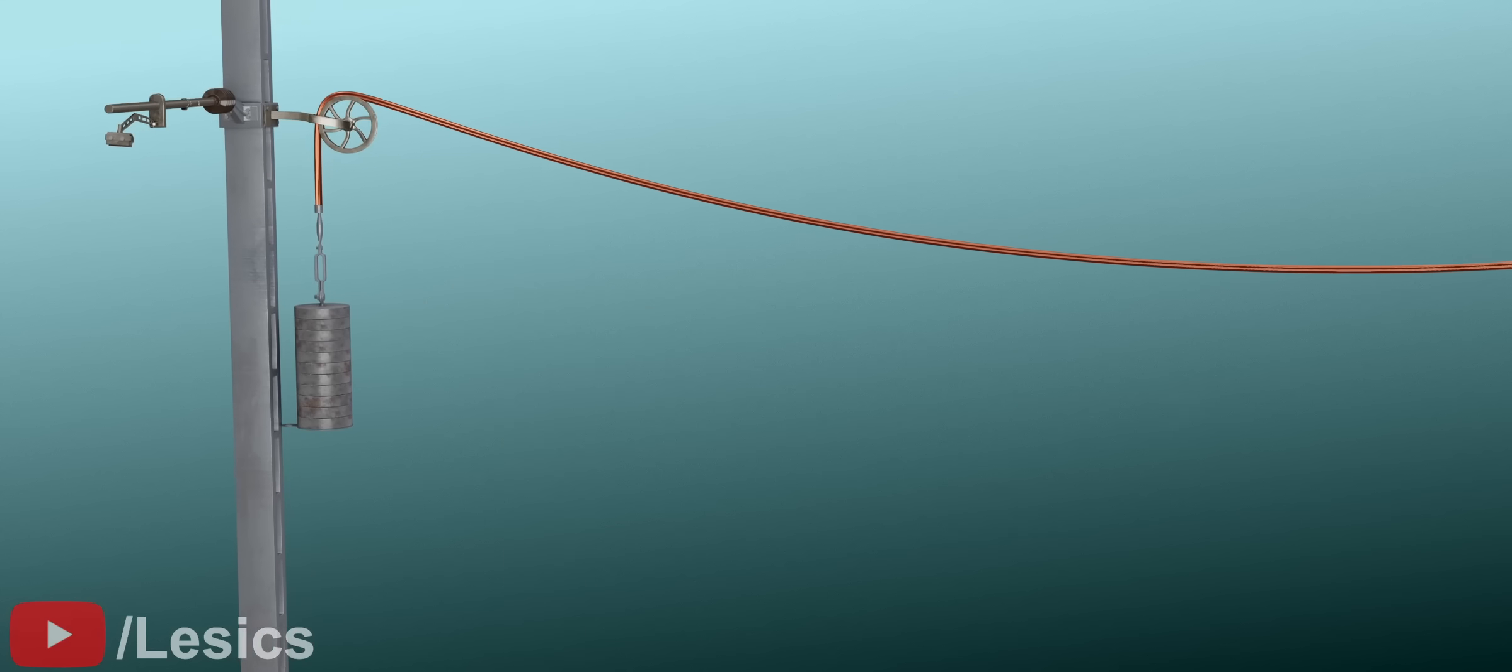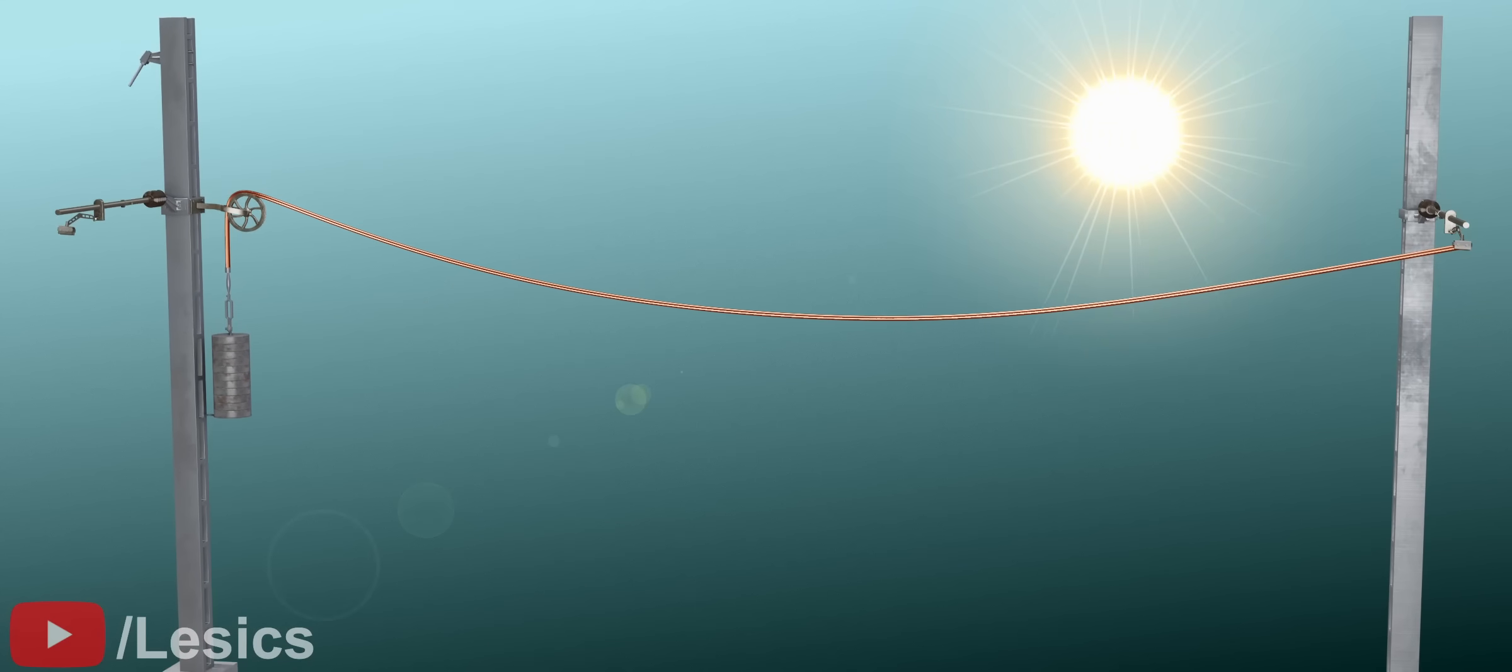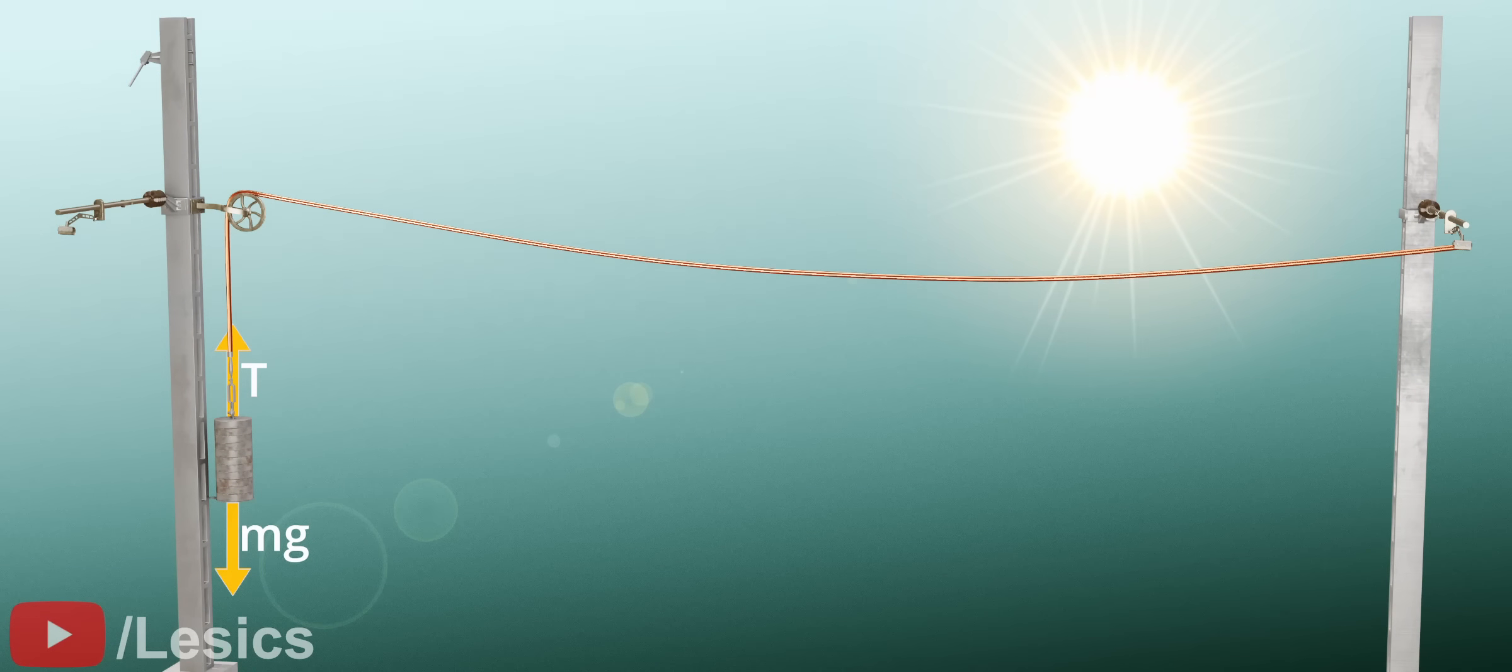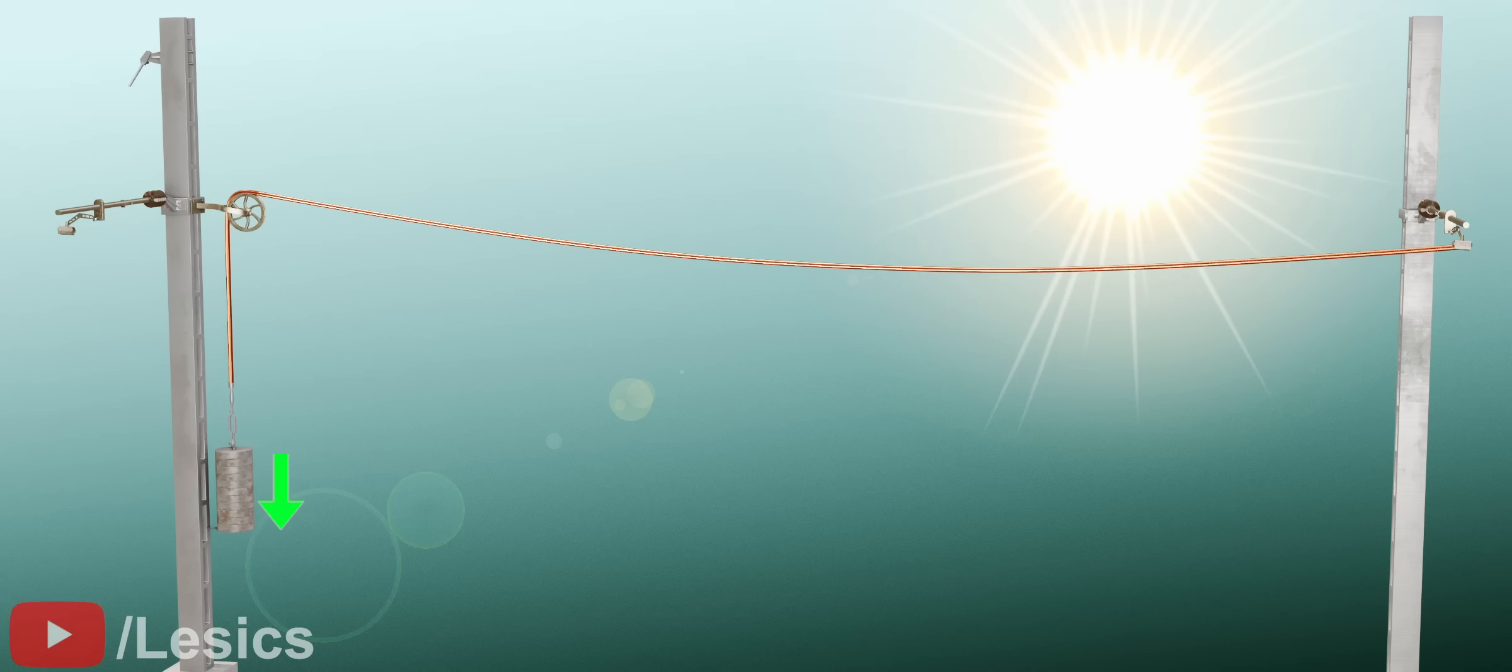When you attach a dead weight to this free end, the wire sag will be greatly reduced. Here, tension in the wire is the same as the weight of the discs. This arrangement will compensate for any temperature change. The more the temperature increases, the more the weight will pull down.